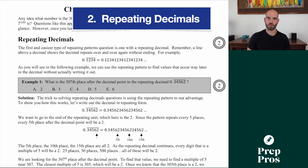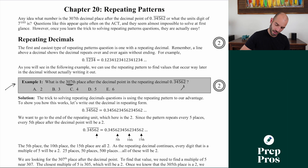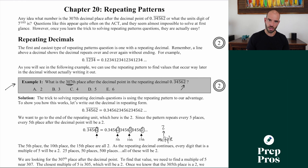Next we're going to learn about repeating decimals. A question like this asks: what is the 307th digit after the decimal point in the repeating decimal 0.34562? This might seem really confusing or intimidating, but it's actually easy once you know the trick. We always want to look at the back of the pattern and use the repeating pattern to our advantage. The twos appear every fifth digit, so every time it's a multiple of five, the digit is a 2.